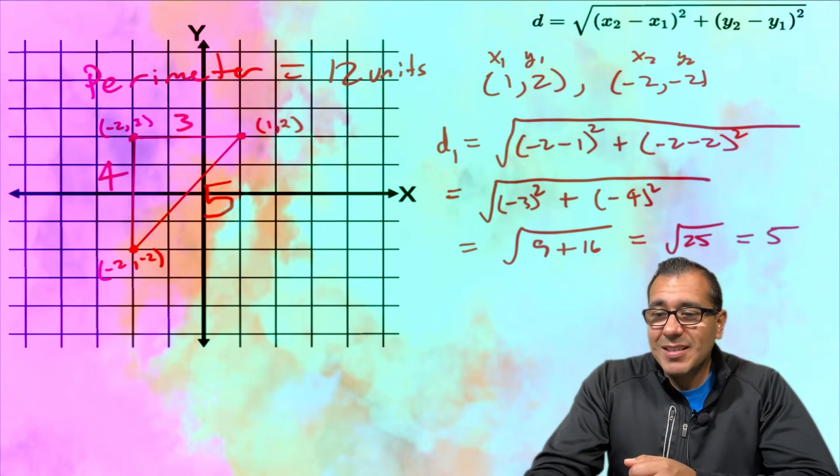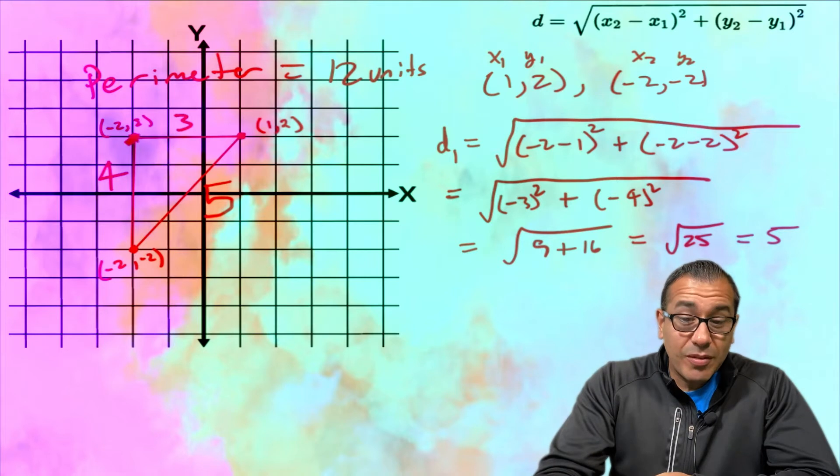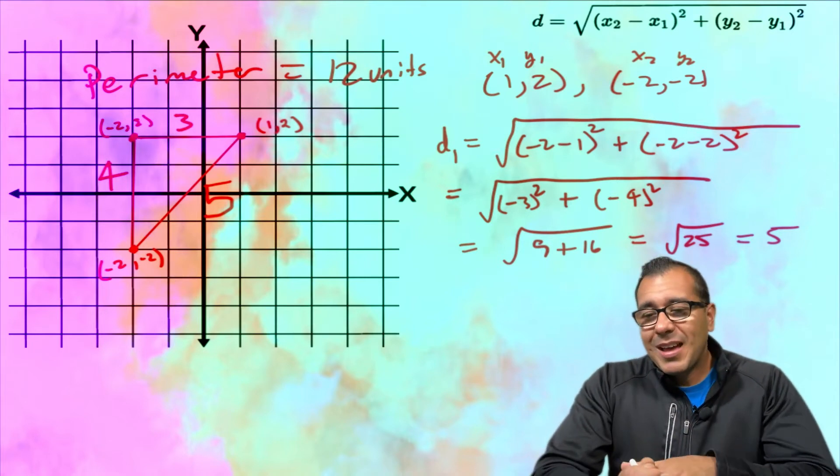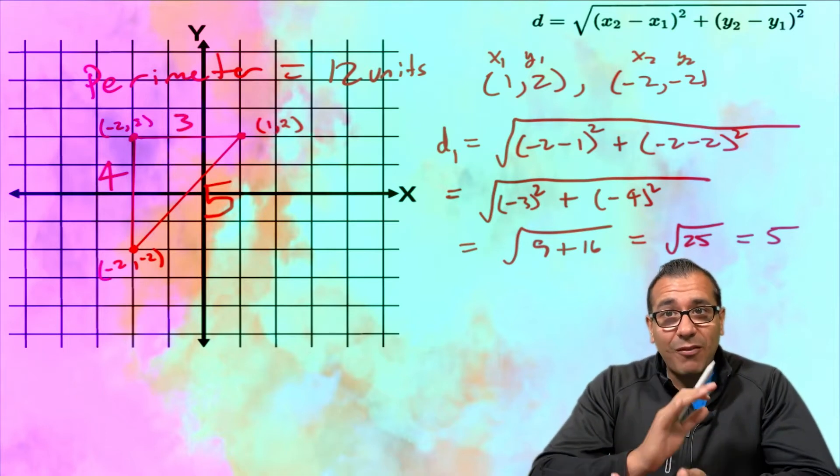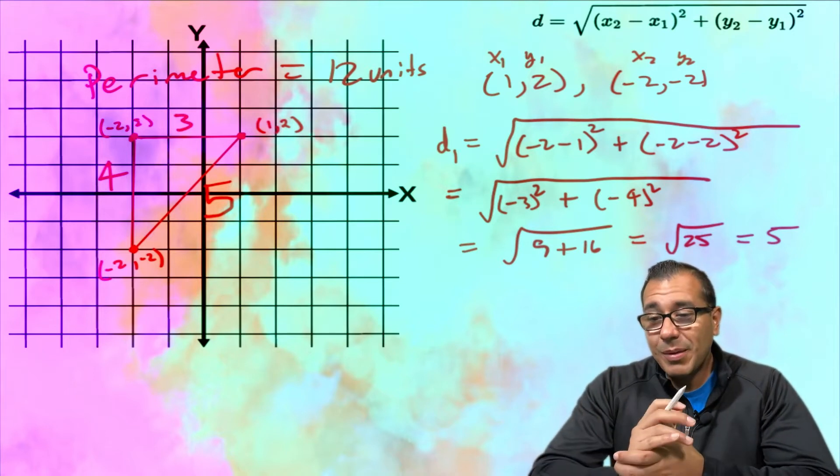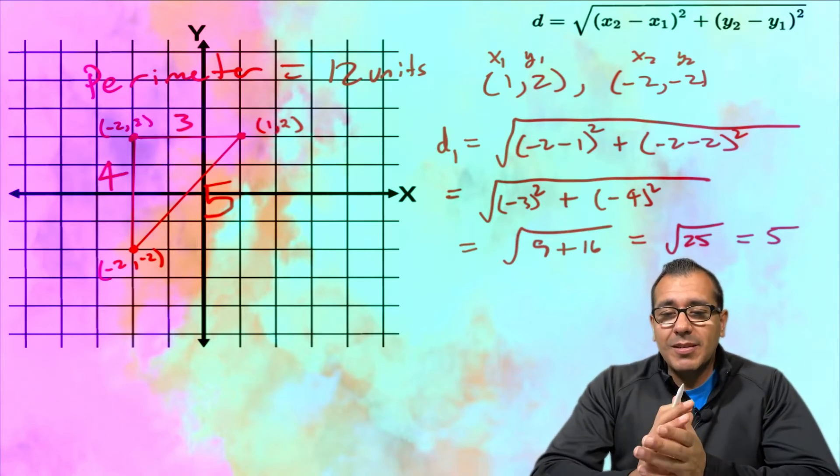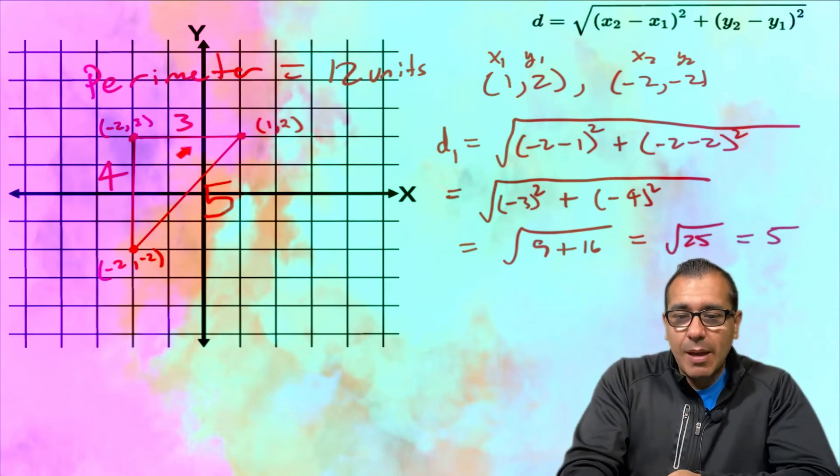So this is our nice distance formula and what's nice is it doesn't matter - here these points are very nice in terms of the points that they gave us. But sometimes the points aren't so nice, they might have square roots, they might have radicals, they might have decimals. So what happens when they give you the points and I can't necessarily count as cleanly as I would in this example?